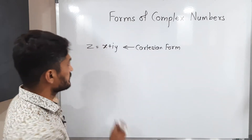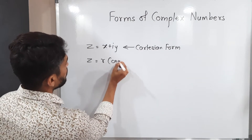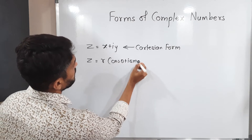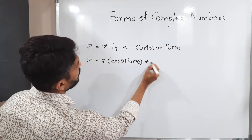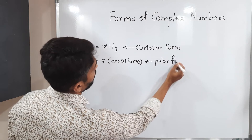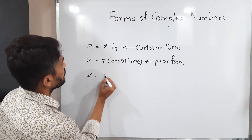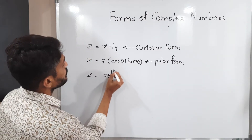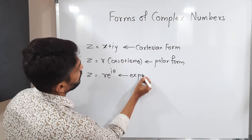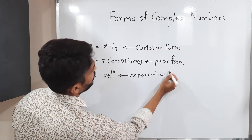Next is polar form: Z is equal to R cos theta plus i sine theta. We call it the polar form. And the last one, Z is equal to R e raised to i theta. This is called exponential form.